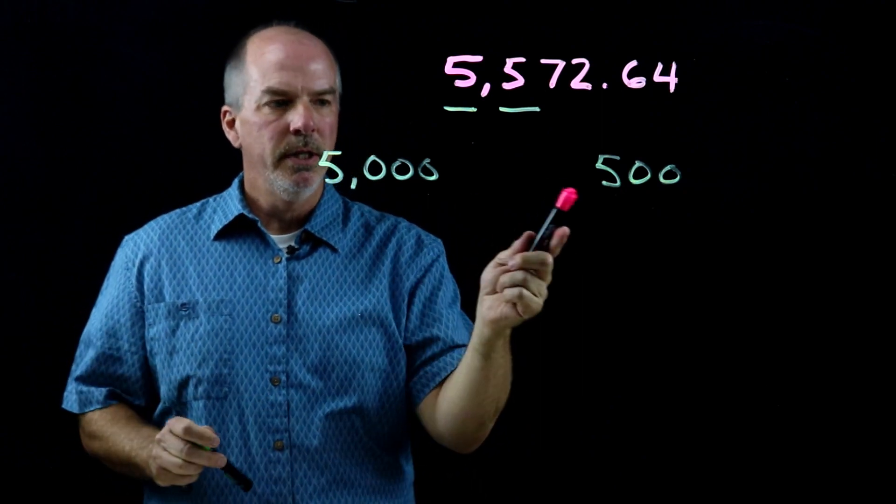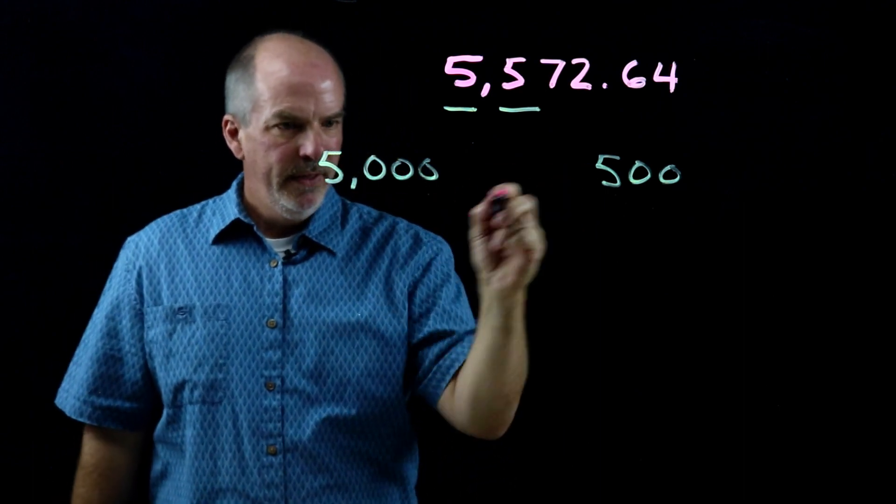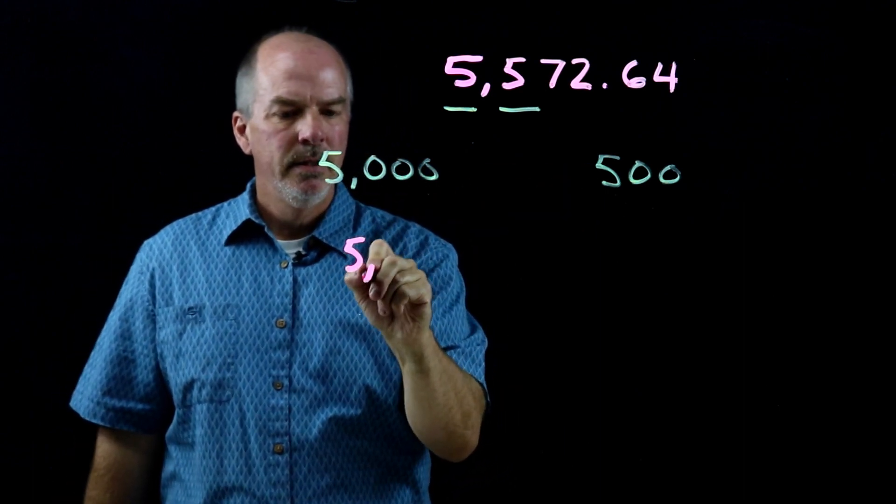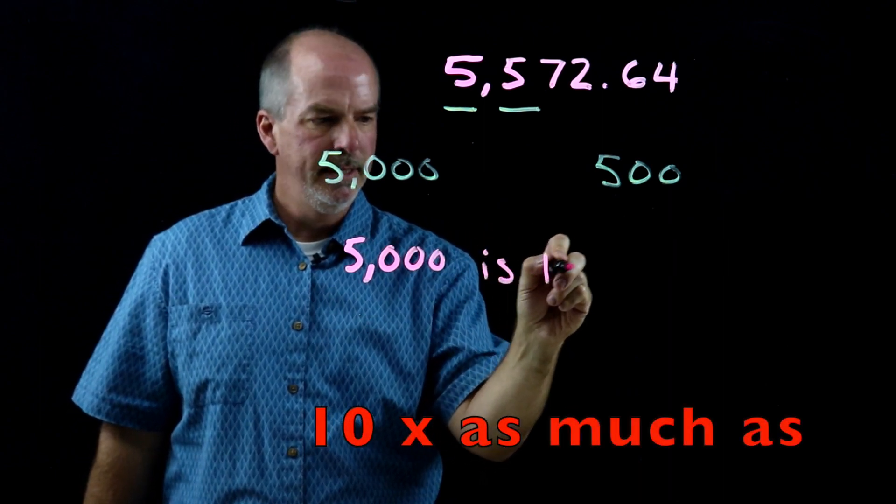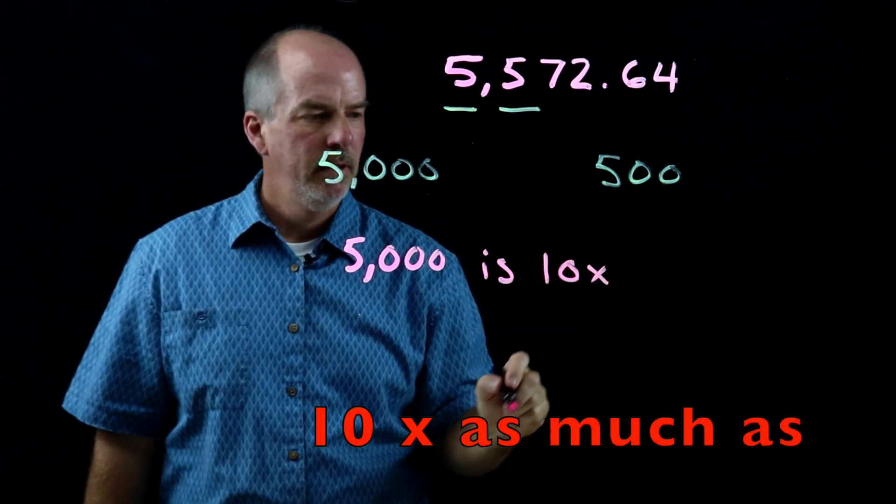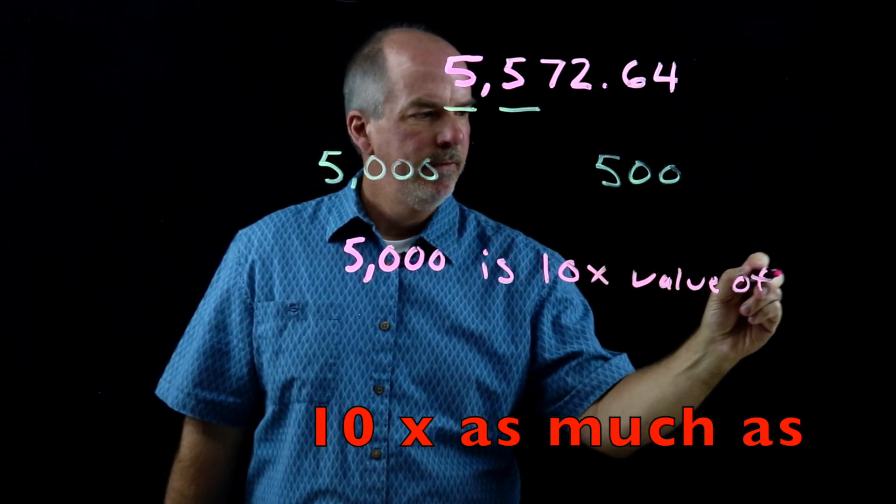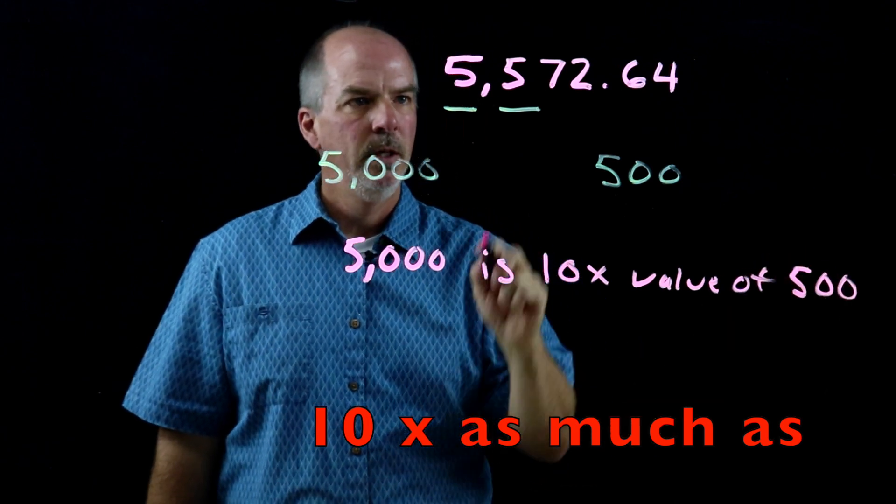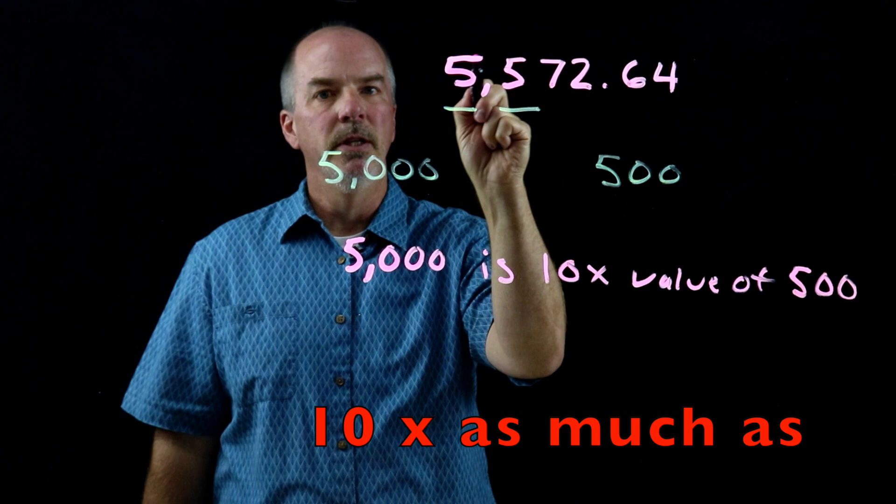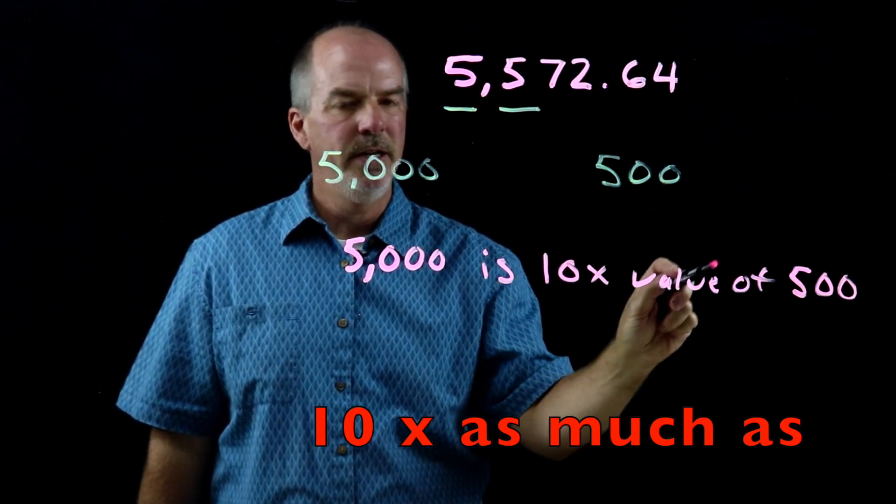So what do I know using our standard about these two? Well, I know that five-thousand is ten times the value of five-hundred. We move one place value to the left. We went up ten times. Five-thousand is ten times the value of five-hundred.